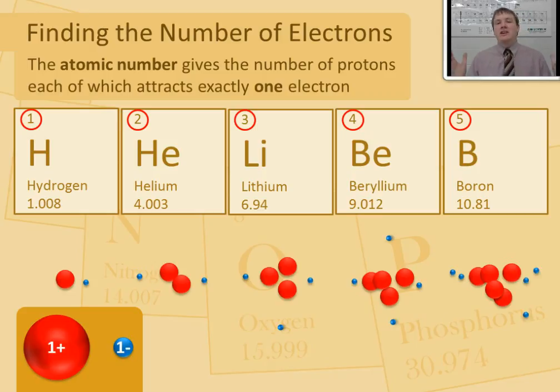This trend will continue on the periodic table. Carbon has six protons. It will attract six electrons. Nitrogen, 7 and 7, and so on throughout the entire table. So here's the thing.